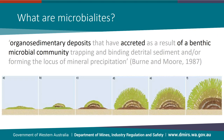There are many definitions of what a microbialite is, but for the purpose of my talk I will be referring to structures that fall under this definition of Burne and Moore. This definition states that microbialites are organosedimentary deposits that have accreted as a result of a benthic microbial community. These structures can be built by either the microbial community trapping and binding detrital sediment or by direct mineral precipitation, but commonly both processes will be occurring.